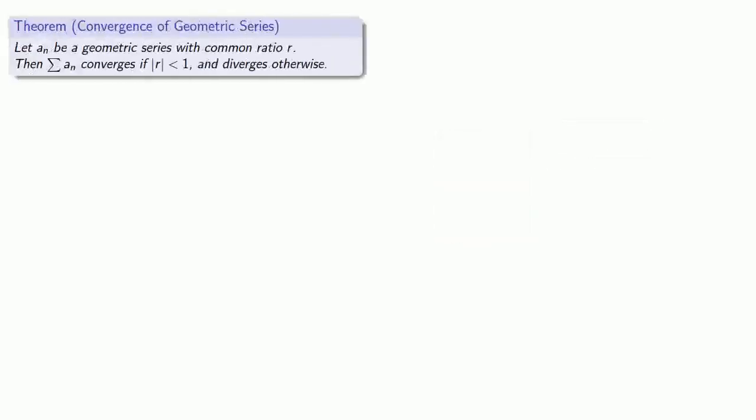In the assignments, you'll look at the convergence or divergence of three important types of series. Here's a summary of results you'll eventually prove for yourself. First, if we have a geometric series with common ratio r, then the series will converge if the absolute value of r is strictly less than 1, and the series will diverge otherwise.